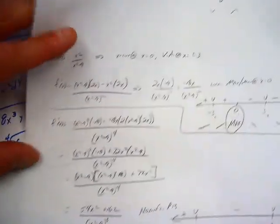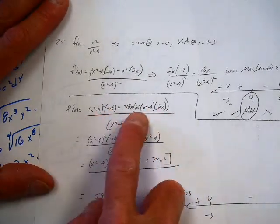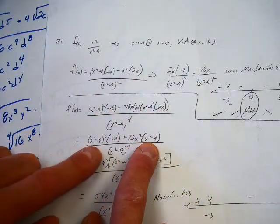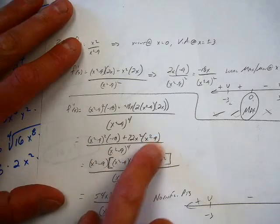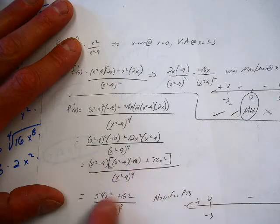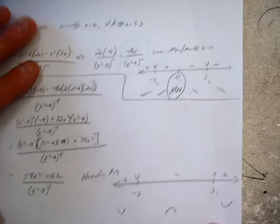Second derivative gets a little hairy. What did I see here? I simplified this, I saw a common x squared minus 9, pulled that out, simplified, ended up with something like this. Has no inflection points, so here's my concavity.